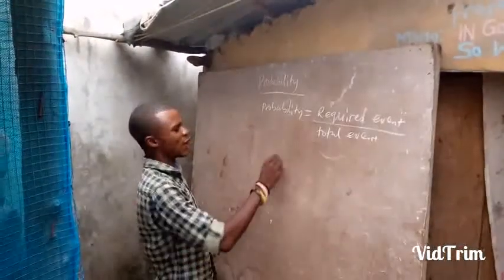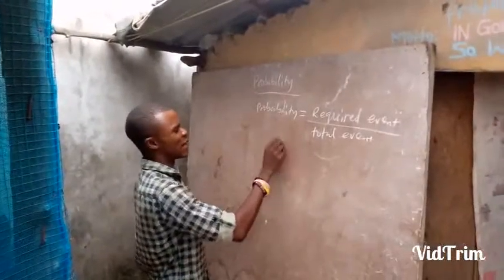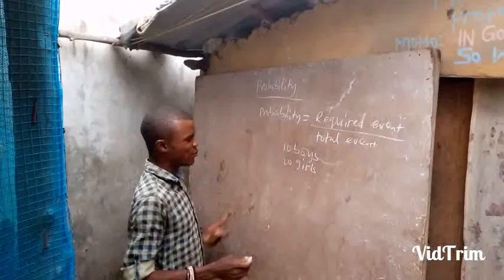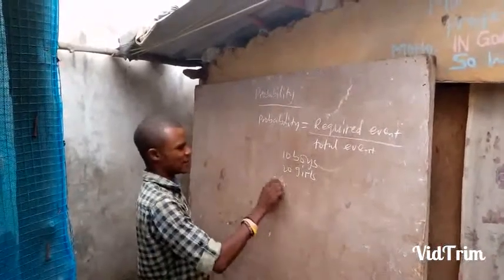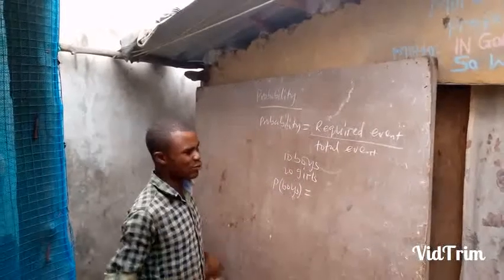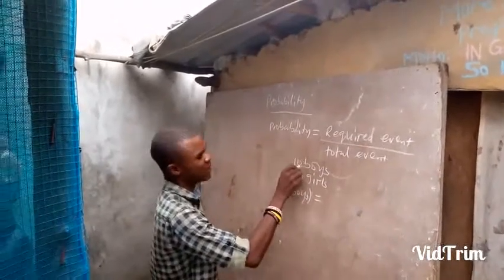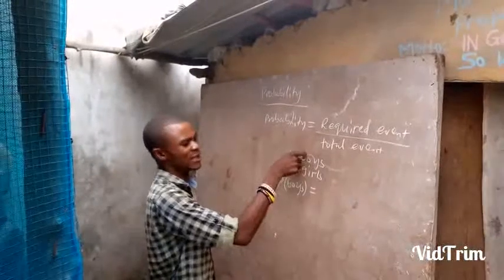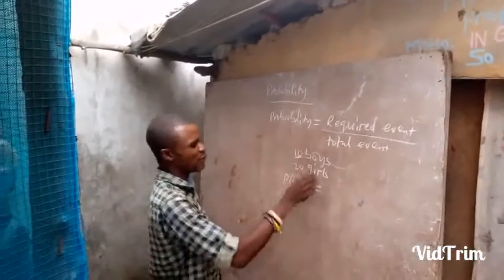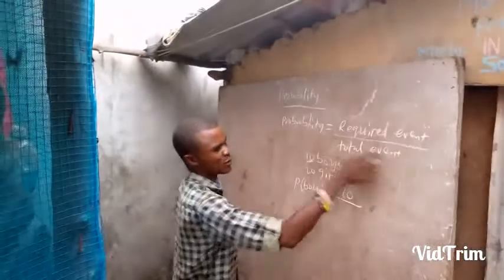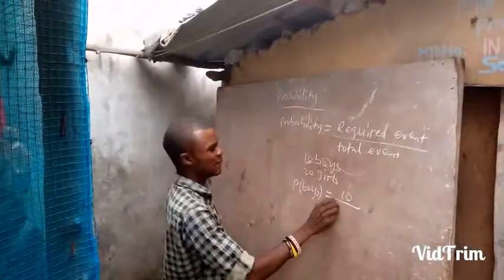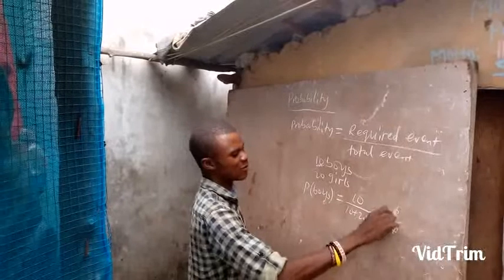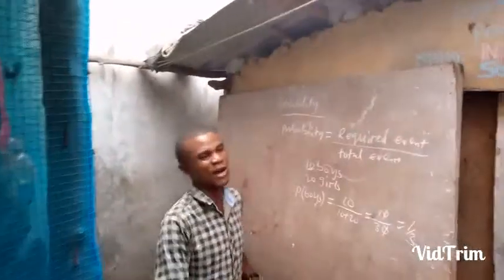For example, if you have in a class 10 boys and 20 girls, and somebody says find the probability of boys — the required event is boys, which is 10, divided by the total event, which is 10 plus 20 equals 30. So you get 10 over 30, which simplifies to 1 over 3.